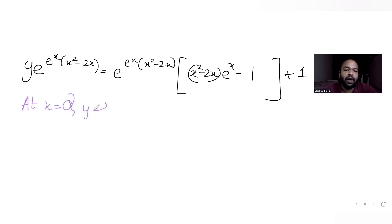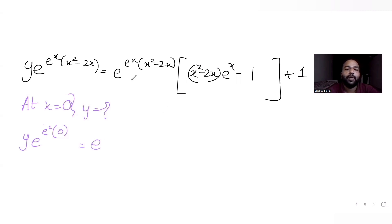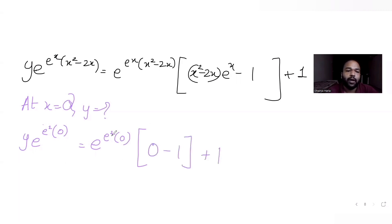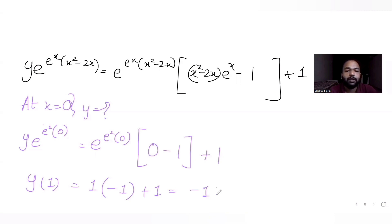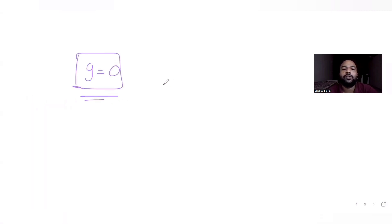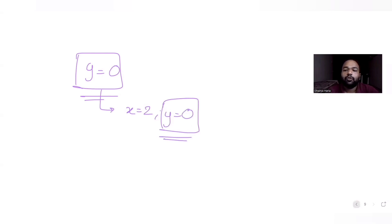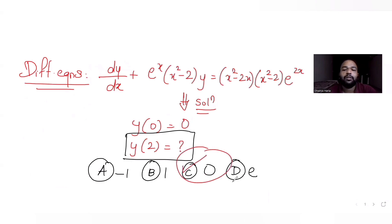Now substituting x = 2: x²−2x = 4−4 = 0, so e^x(x²−2x) = e²·0 = 0. The equation becomes y·e^0 = e^0·(0−1) + 1 = 1·(−1) + 1 = 0. So y·1 = 0, giving y = 0 at x = 2. The answer is option C.